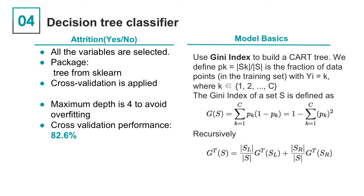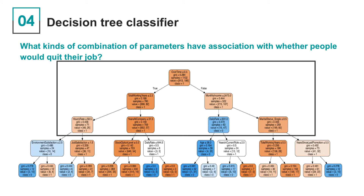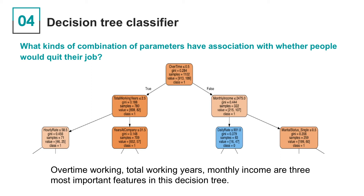Random forest gathers a group of decision trees, while a decision tree classifier uses a tree structure to classify data into a tree with pure leaves. In practice, we use the Gini index to build a CART tree. All variables are selected and cross-validation is applied. We choose a maximum depth of 4 to avoid overfitting, and the cross-validation performance is around 83%. We visualize the tree and can tell what combinations of parameters are associated with whether people would quit their job. Looking at the top two layers, overtime working, total working years, and monthly income are the three most important features in the decision tree.